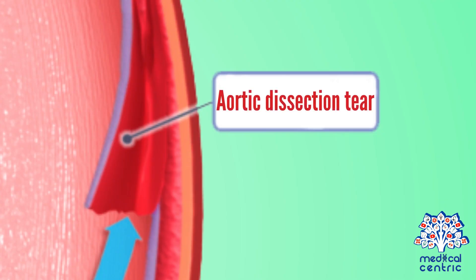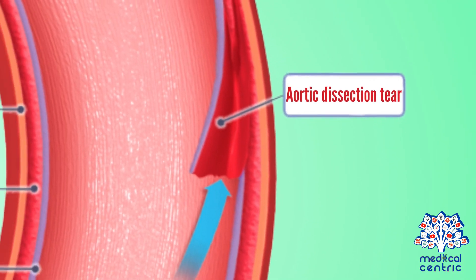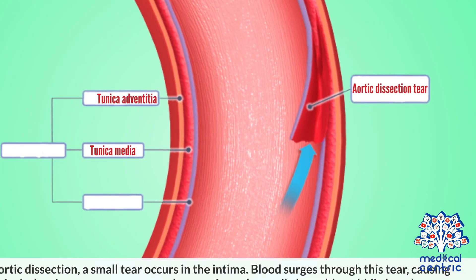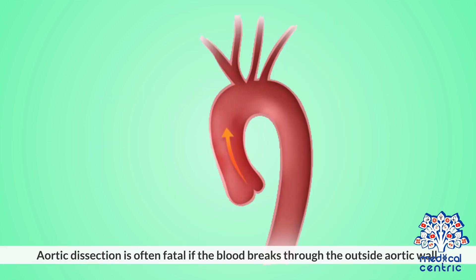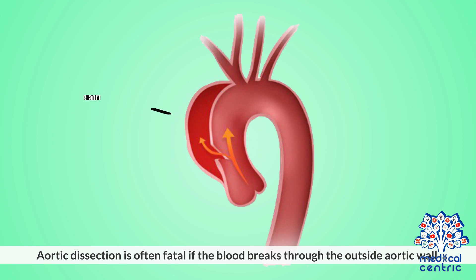In an aortic dissection, a small tear occurs in the intima. Blood surges through this tear, causing the intima layer to separate or strip away from the media layer, or the middle layer. Aortic dissection is often fatal if the blood breaks through the outside aortic wall.